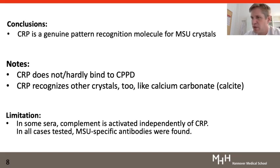And lastly, there's one limitation. In some sera we see complement activation in the absence of CRP. In all these cases we found MSU specific antibodies. So it's likely that once a person has generated MSU specific antibodies, these then activate the complement system and CRP is not important anymore.